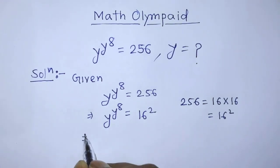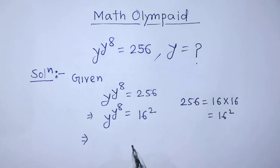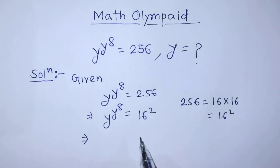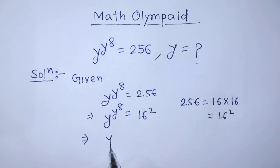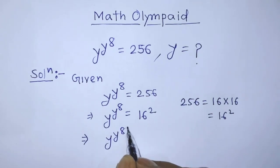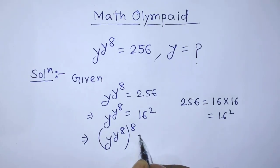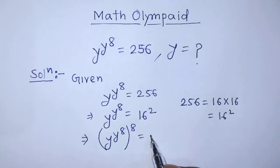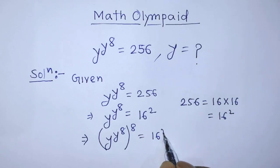Now we have to take power 8 on both sides of this equation. After taking the power 8 on both sides, we can write on the left hand side: y raised to the power y raised to the power 8, whole to the power 8, is equal to 16 to the power 2, whole to the power 8.